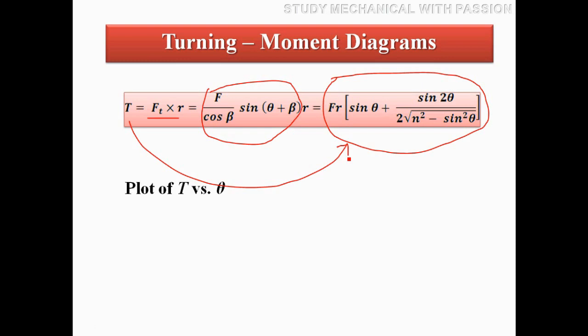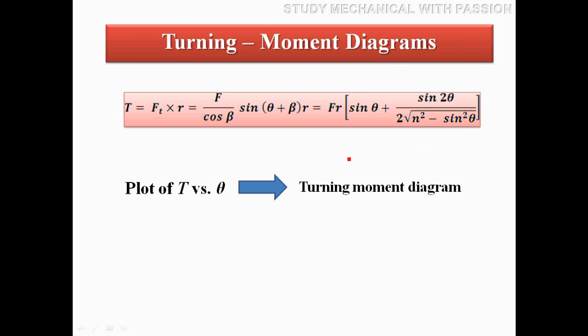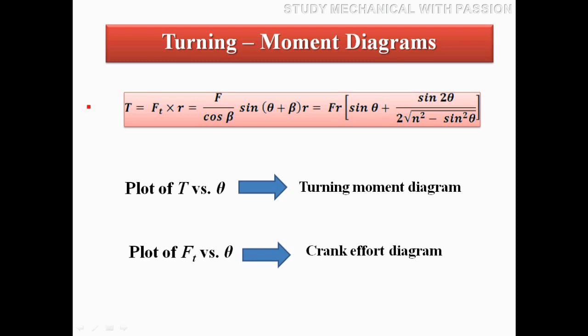That graph is the turning moment diagram. A plot of T versus theta is known as the turning moment diagram. Similarly, a plot of Ft versus theta can also be used since T = Ft × R, and R (crank radius) is constant, so T is directly proportional to Ft. The shape of the turning moment diagram and the crank effort diagram are the same.